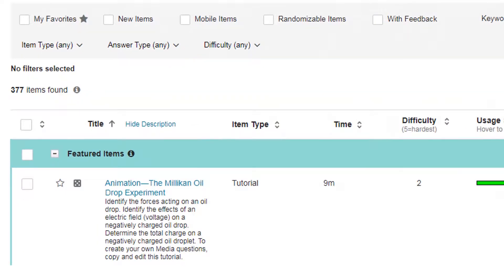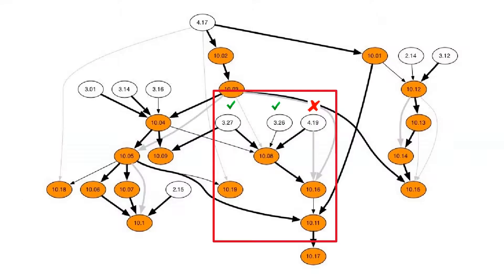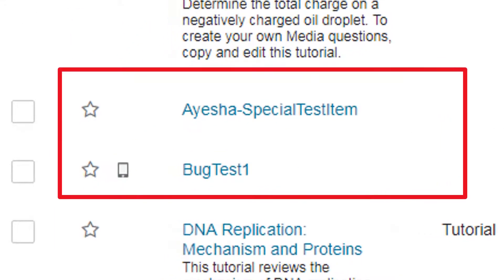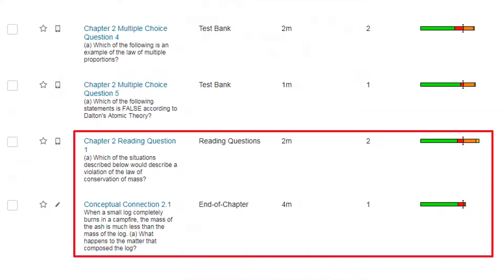The parent should include mostly publisher-created items from your textbook's current edition. The items each student sees in the follow-up are determined by knowledge graphs that plot the knowledge dependencies among items. Only current publisher items for your textbook are in the knowledge graph for your course. You can include other items in the parent assignment, but they won't add value to the follow-up. Consider what you want students to learn from the homework and the follow-up, and assign publisher items based on those goals.